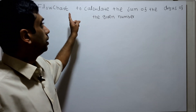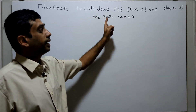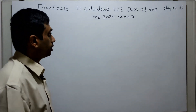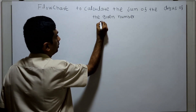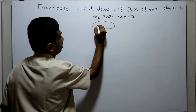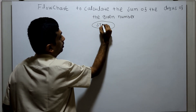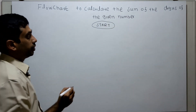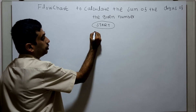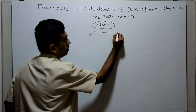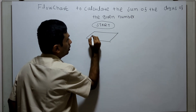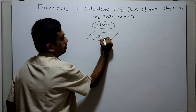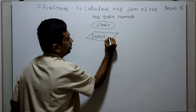Hello friends, we are going to draw a flowchart to calculate the sum of the digits of a given number. This is the logical start in the flowchart. I am obtaining a number from the user as an input — input n.